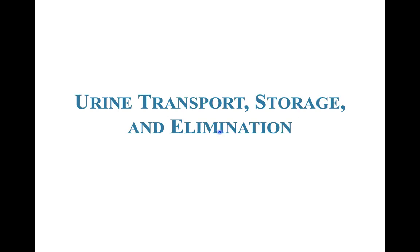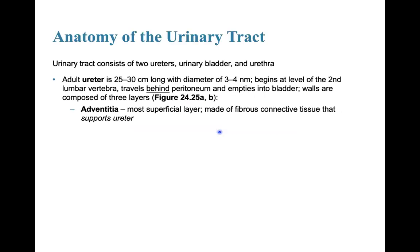The urinary tract consists of two ureters, a urinary bladder, and a urethra. The adult ureter is 25 to 30 centimeters long with a diameter of about three to four millimeters, begins at the level of the second lumbar vertebrae, travels behind the peritoneum, and empties into the bladder.